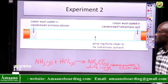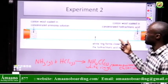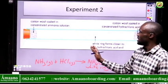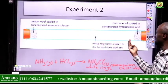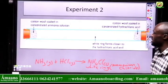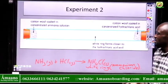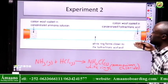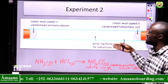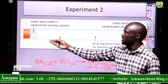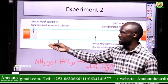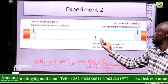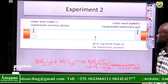When you look at the tube, these two gases will not meet in the middle. They will actually meet towards the end near the hydrogen chloride. The reason is that hydrogen chloride diffuses slowly because it is heavy, while ammonia is light and its molecules move faster. So ammonia travels a longer distance and meets closer to the hydrogen chloride end.